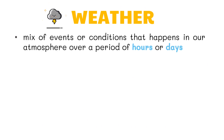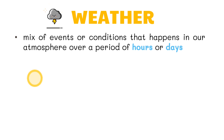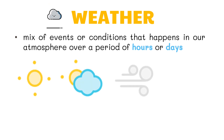Weather is a mix of events or conditions that happen in our atmosphere over a period of hours or days. A thunderstorm, a snowstorm, and today's temperature all describe the weather. Weather is highly variable day to day and from one year to the next.